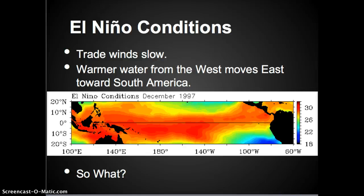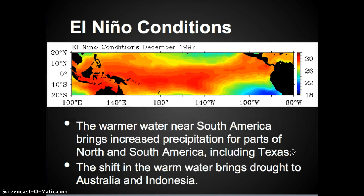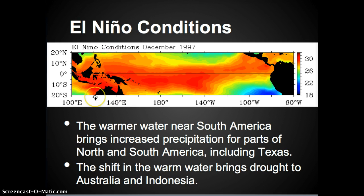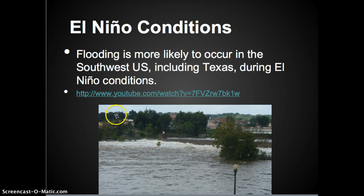When we have El Niño conditions, our trade winds slow. Warmer water from the west moves east towards South America. The warmer water near South America brings increased precipitation for parts of North and South America, including Texas. The shift in the warm water brings drought to Australia and Indonesia. Flooding is much more likely to occur in the southwest United States, including Texas, during El Niño conditions.